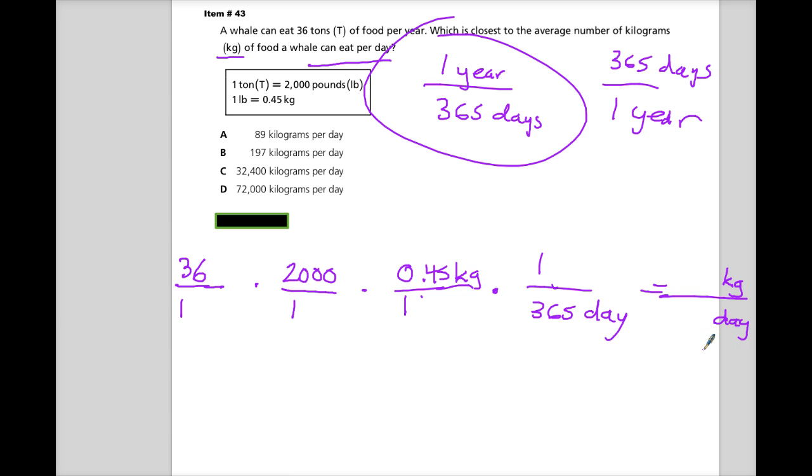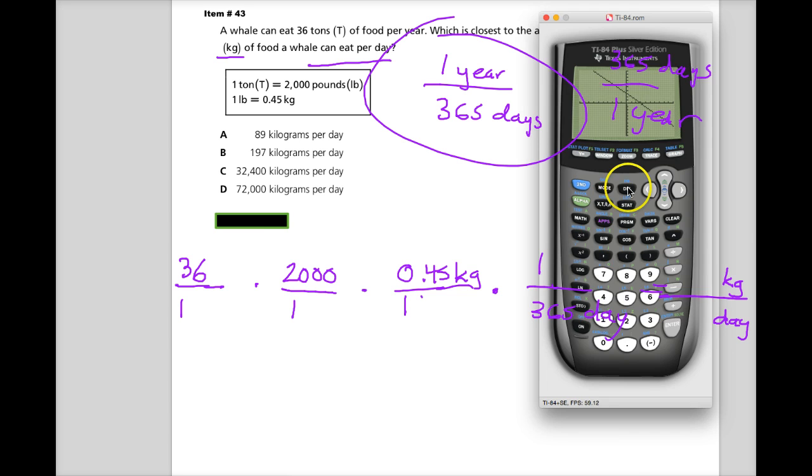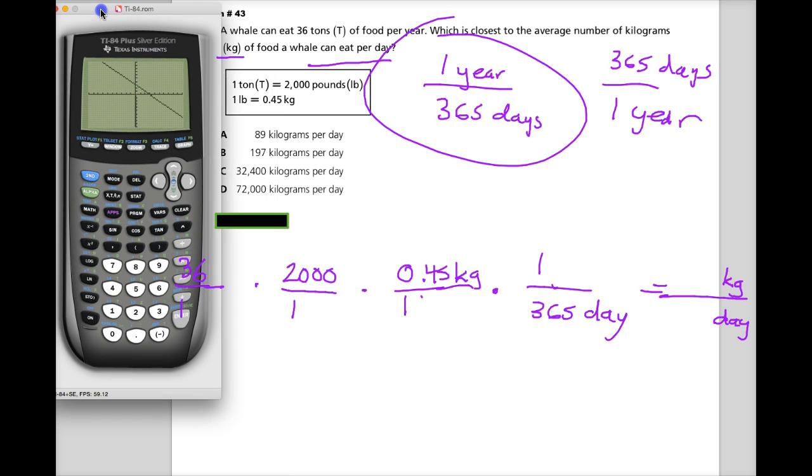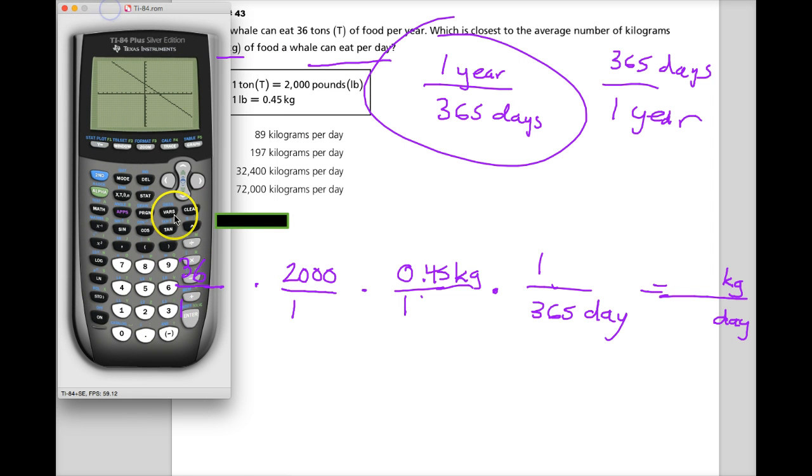There's a couple ways that you could do this. You could multiply all the numerators together and put it on top. And then multiply the denominators together and put them on the bottom, which would just be 365, because times one, times one, times one. What else are you going to do? And then reduce it. Or you can set it up all as big fractions. And that just sort of depends on your personal preference. Obviously, it's your life. I don't care what you choose.